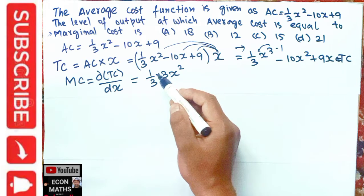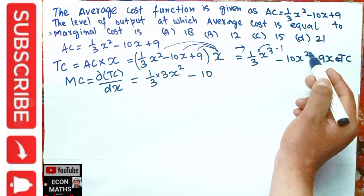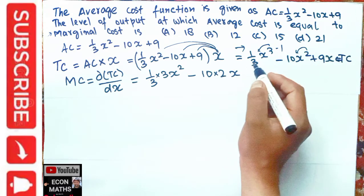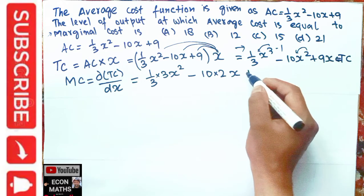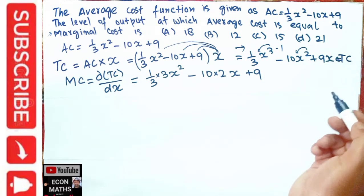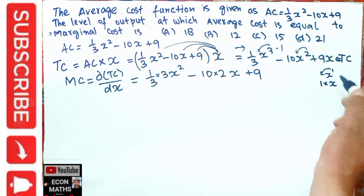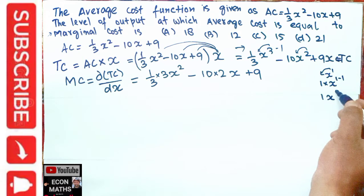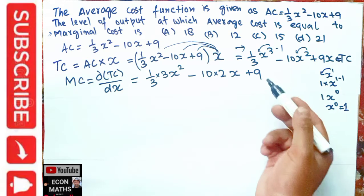For the next term, the derivative of x² is 2x, so -10x² becomes -20x. For the last term, 9x: since it is x to the power 1, the exponent 1 becomes the coefficient, and the power becomes 0. Since x⁰ = 1, the derivative of x is simply 1, giving +9. So marginal cost = x² - 20x + 9.